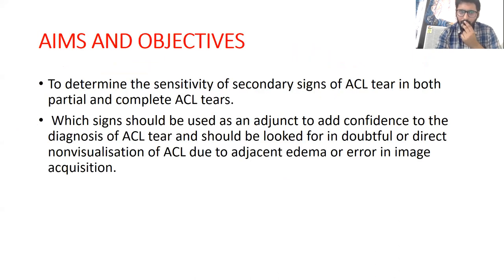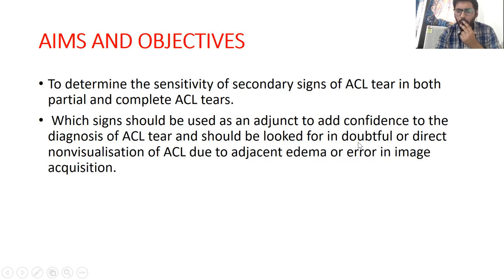The aims and objectives are to determine the sensitivity of secondary signs of ACL tear in both partial and complete ACL tears, and to identify which sign should be used as an adjunct to add confidence to the diagnosis of ACL tear. These signs should be looked for in doubtful cases or when direct visualization of the ACL is hindered due to adjacent edema or errors in image acquisition.